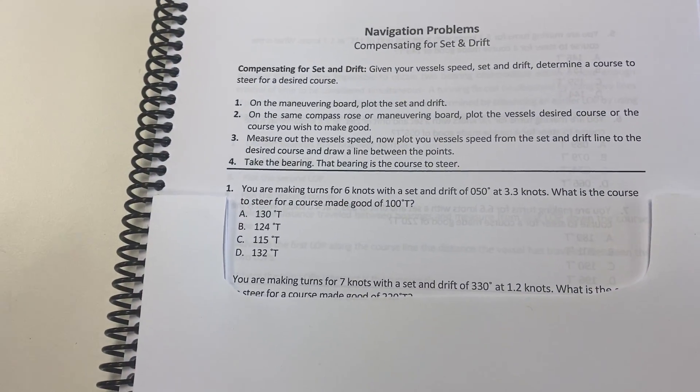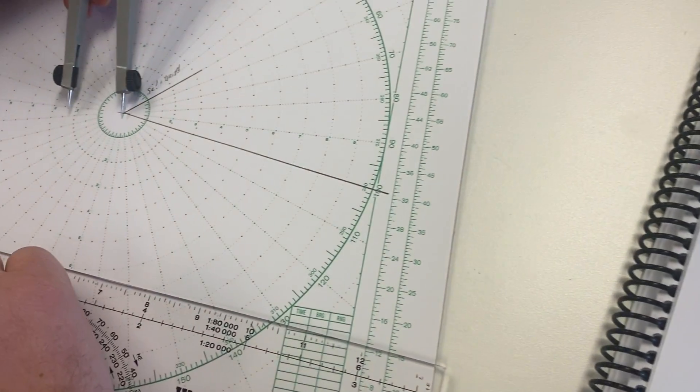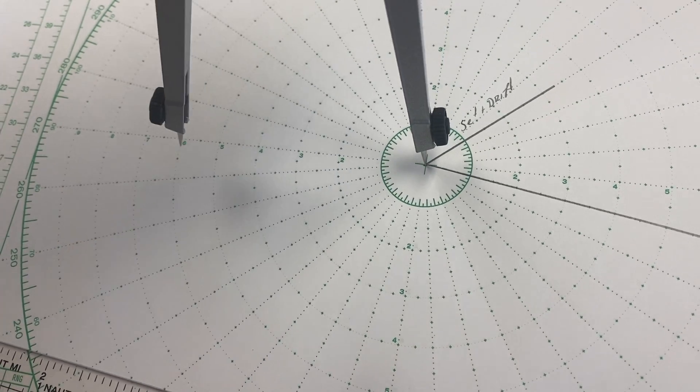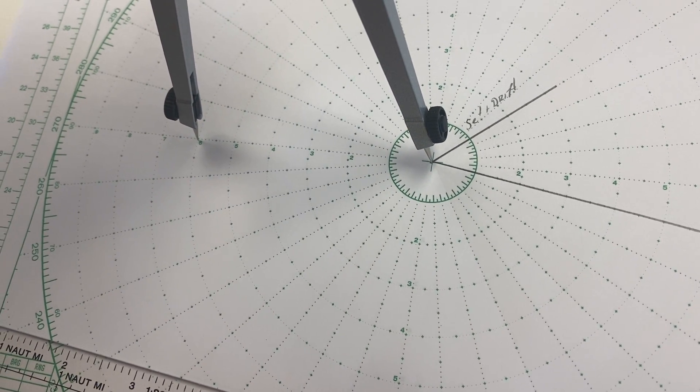We're making turns for six knots, so we're going to measure from the center out to the six here, right from the center, right to the six.